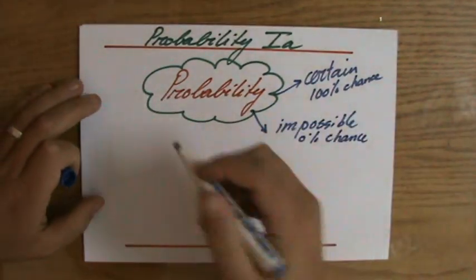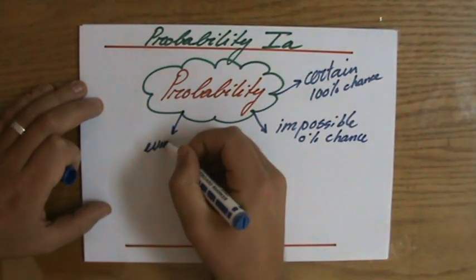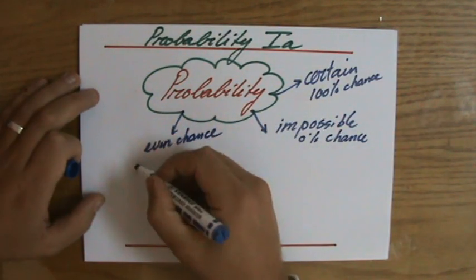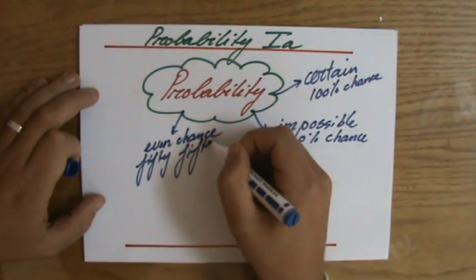Now, what lies exactly in between certain and impossible? Well, for instance, you can call that an even chance. Or maybe you would say 50-50, a 50-50 chance of something happening.